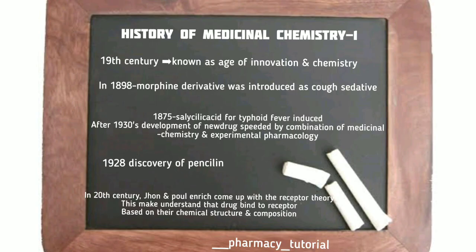Now let us talk about the history of medicinal chemistry. In the 19th century it was known as the age of innovation and chemistry. In 1898 the morphine derivative was introduced as a cough sedative. In 1875 salicylic acid was used for typhoid fever. After the 1930s there was development of new drugs and a combination of medicinal chemistry and experimental pharmacology. In 1928 there was the discovery of penicillin, the first antibiotic — a greatest achievement by Alexander Fleming.